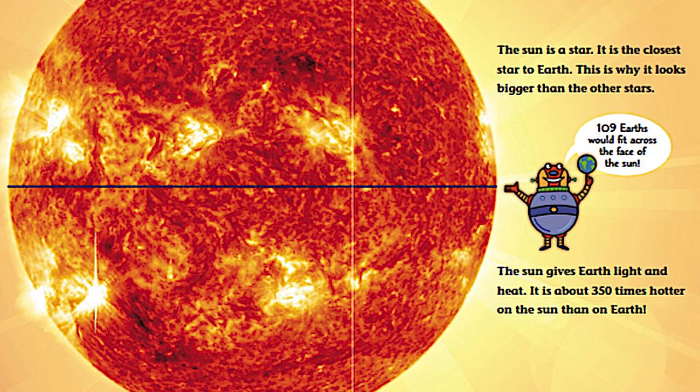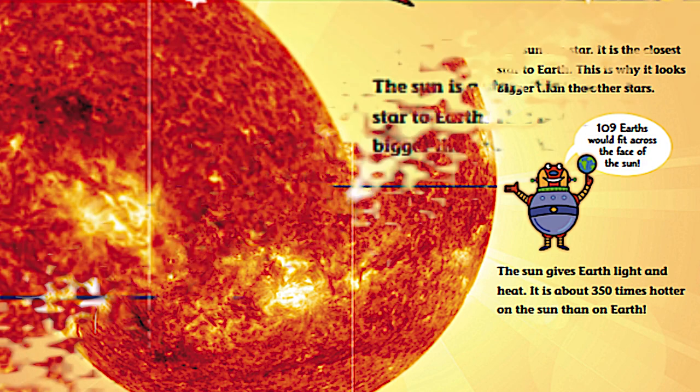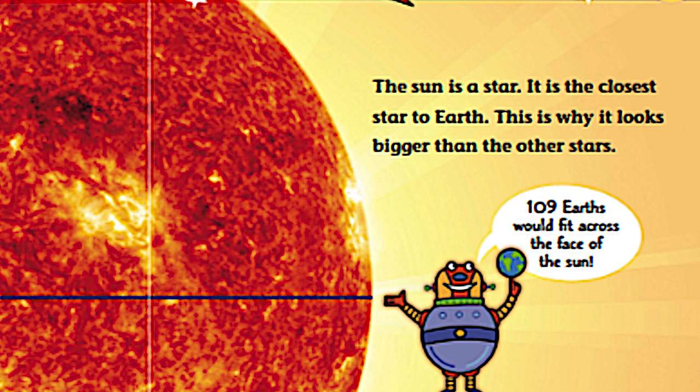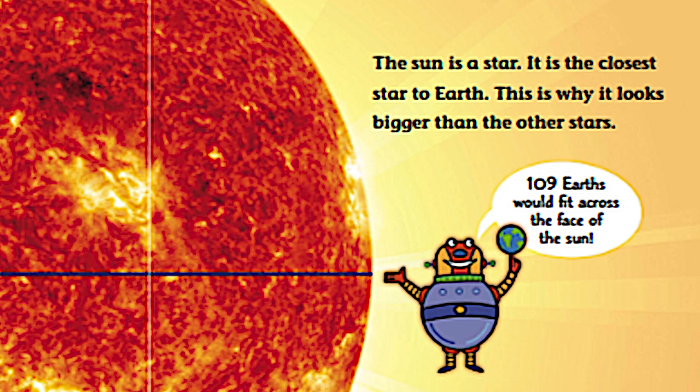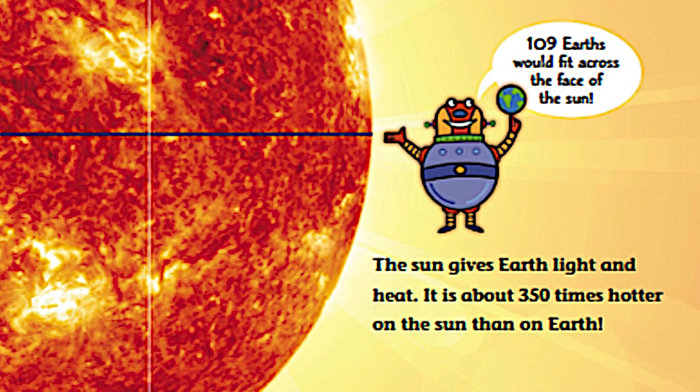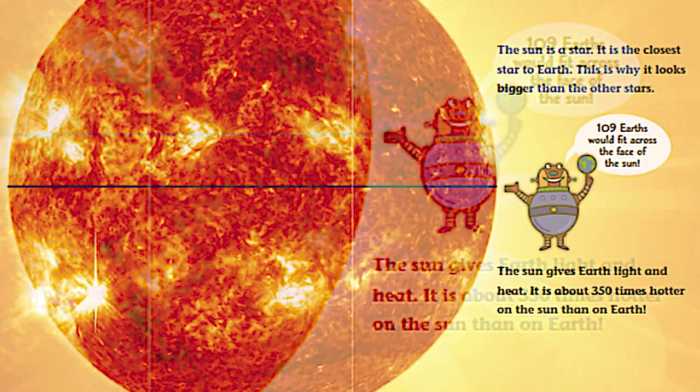Wow. Look at that picture. What is that a picture of? Can you tell? That's right. It's the sun. The sun is a star. Did you know that? It is the closest star to earth. This is why it looks bigger than the other stars. The sun gives earth light and heat. It is about 350 times hotter on the sun than on earth. Can you believe that?